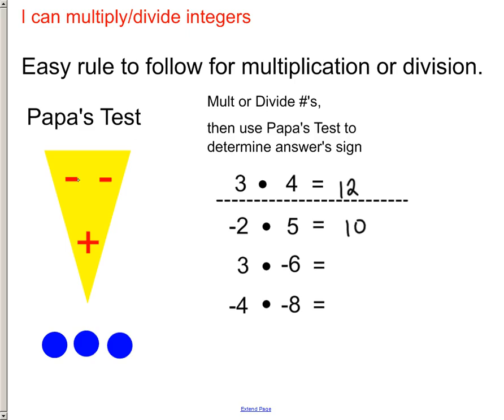But then, if you do this little drawing of a triangle, I call it Papa's Test because it kind of looks like a slice of pizza that you could get from Papa John's.